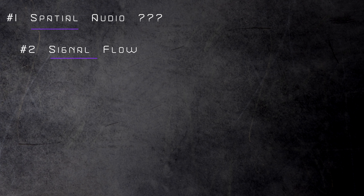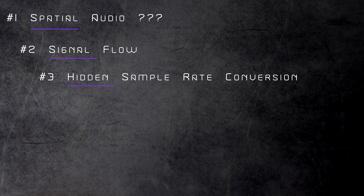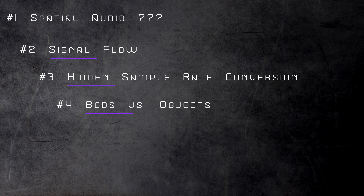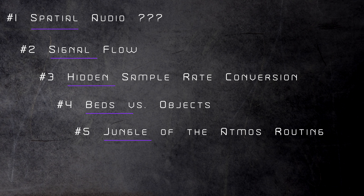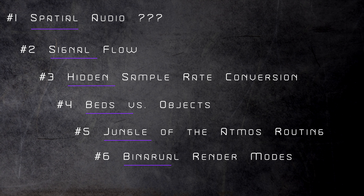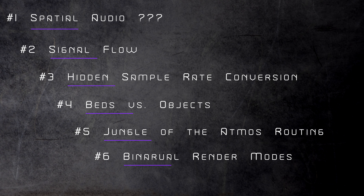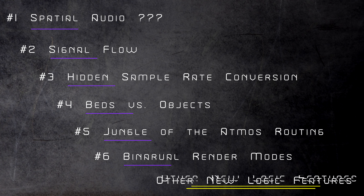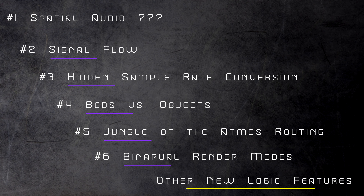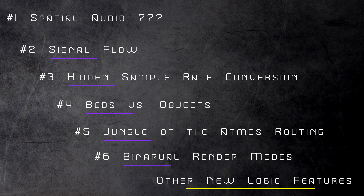First, a few words about the big confusion about spatial audio. Then the very special signal flow in the Logic implementation. The hidden sample rate conversion you definitely should know about. Then the big question about beds versus objects. Then a journey into the jungle of the Atmos routing. And finally, a brief look at binaural render modes. In the second chapter, I will show some of the lesser known new features in this update that might still have a big impact on your Logic projects. Some are not even mentioned in the release notes.